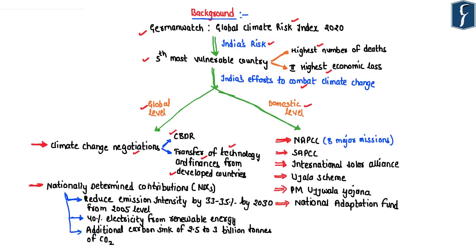India has also submitted its Nationally Determined Contribution under the Paris Climate Change deal. Under its NDC, India committed to reducing the emission intensity of its GDP by 33–35% by 2030 (using 2005 as the reference year), generating 40% of electricity from renewable energy resources, and creating an additional carbon sink of 2.5 to 3 billion tons of CO₂ mainly through afforestation.